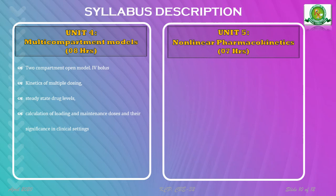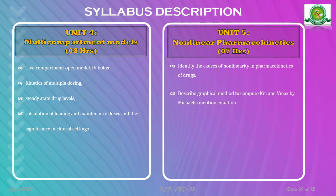Unit 5 covers non-linear pharmacokinetics — the causes of non-linearity in absorption, distribution, metabolism, and elimination, and how these deviations occur. Km (Michaelis constant) and Vmax (theoretical maximum rate of the process) are computed using the Michaelis-Menten equation. Conditions where Km equals Vmax, Km is greater than Vmax, or Km is less than Vmax are analyzed to understand their correlation with non-linear pharmacokinetics.